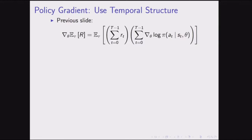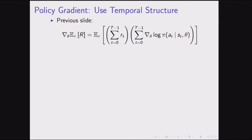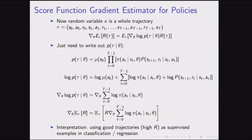We can improve this formula. The basic version is an unbiased estimator for the policy gradient, but we can write down other formulas with the same mean but lower variance — better estimators. This is important because the basic formula has really high variance when you have a large number of time steps.